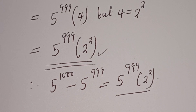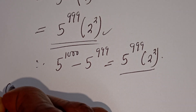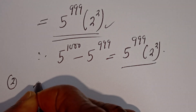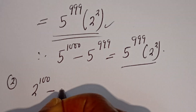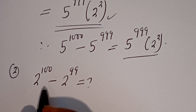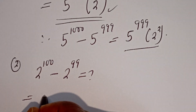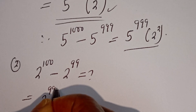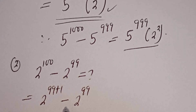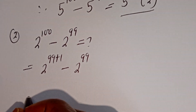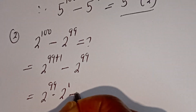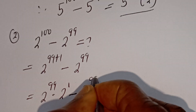Now let's check this. If you have 2 to the power of 100 minus 2 to the power of 99, what is the answer? Here, this is 2 to the power of 99 plus 1 minus 2 to the power of 99. Then this is equal to 2 to the power of 99 multiplied by 2 to the power of 1, minus 2 to the power of 99.